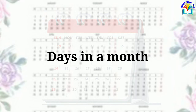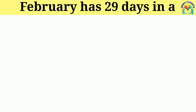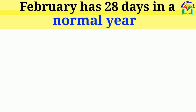Days in a month. You can use your knuckles to remember which months have 31 days. Here's how. Hold up your fists as shown above. Count the months from left to right using your knuckles and the space between each knuckle. Months on the knuckles have 31 days. Months between the knuckles have 30 days, except February which has 28 days or 29 on a leap year. February has 29 days in a leap year and 28 days in a normal year.